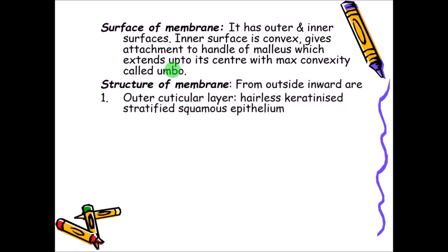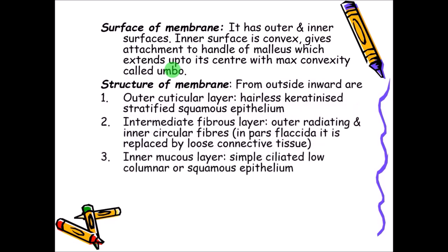The tympanic membrane is trilaminar, with three layers. The outer cuticular layer is keratinized stratified squamous epithelium, which is hairless. The intermediate fibrous layer contains outer radiating and inner circular fibers. In the pars flaccida, the fibrous layer is replaced by loose connective tissue, which is why the pars flaccida is lax and loose. In the pars tensa, the fibrous layer is present, making it tense.